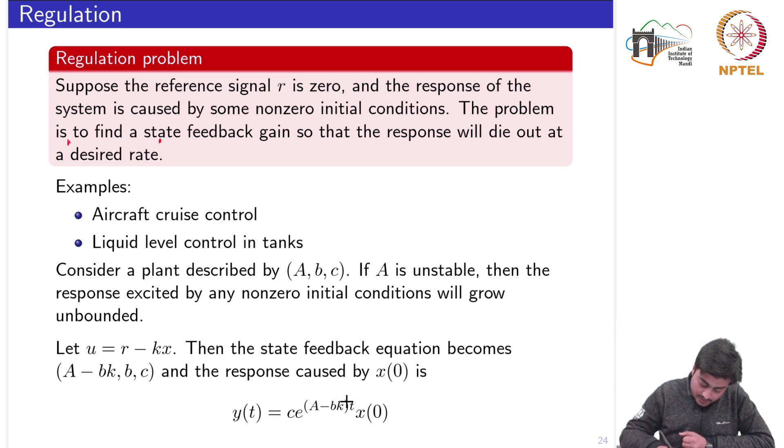We need to design a state feedback controller K so that we could place the eigenvalues to some desired location. If A is unstable then for any non-zero initial condition the response will grow unbounded.